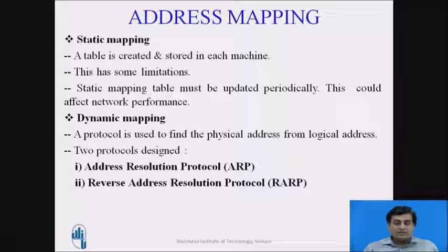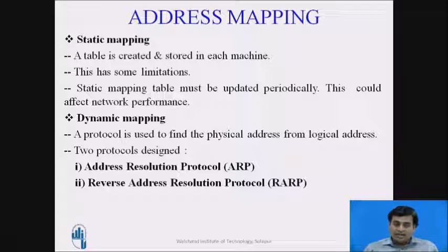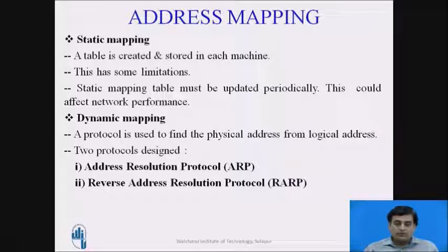The other mapping style is dynamic mapping. In dynamic mapping, when a source machine has a destination machine's IP address, the source machine uses the services offered by ARP. ARP is a protocol used to find the physical address from the logical address. Two protocols are used in dynamic mapping: Address Resolution Protocol, which maps logical addresses to physical addresses, and Reverse Address Resolution Protocol, which maps physical addresses to logical addresses.